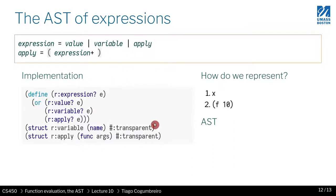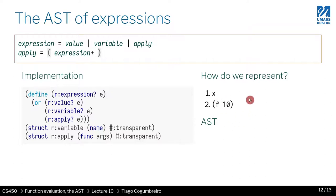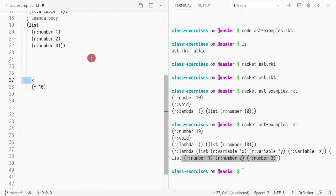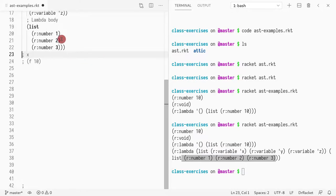Now we want to show how one represents code expressions in terms of the AST. We have two examples: one that is just a variable, and a second which is a function call. Try to represent those in Racket — pause the video, and when you're done please resume. The first one is pretty easy since we already did it: (our-variable 'x).